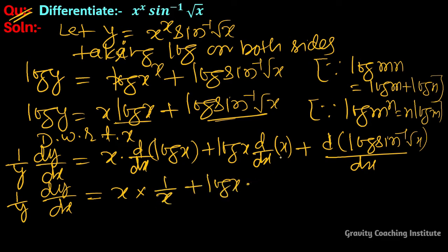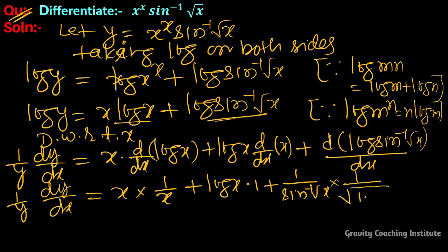So 1 upon y · dy/dx equal to x into (1 upon x) plus log x into 1, and applying chain rule: first differentiation of log gives 1 upon sine inverse root x, then differentiation of sine inverse root x gives 1 upon root(1 minus root x whole square), and differentiation of root x gives 1 upon 2 root x. The x terms cancel.